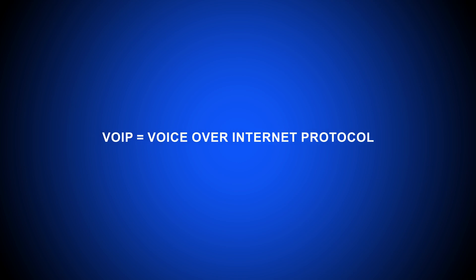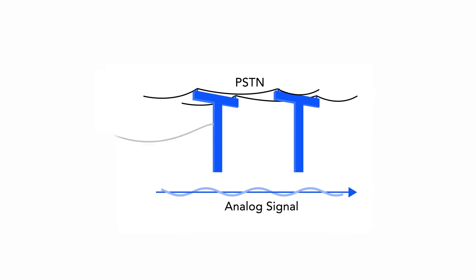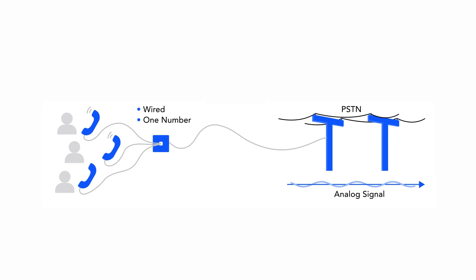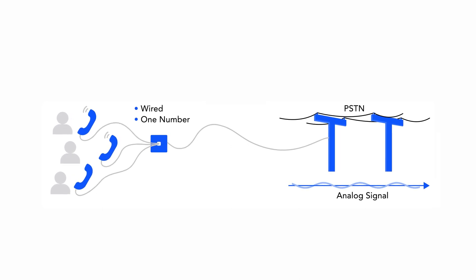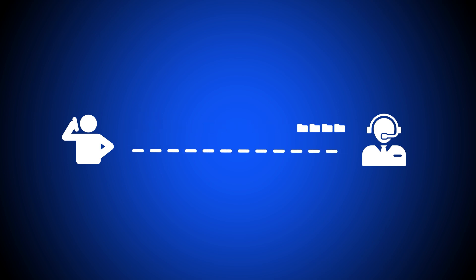VoIP, or Voice Over Internet Protocol, is a digital phone system technology that allows users to make voice calls over the internet. Unlike traditional phone systems which use the public switched telephone network, or PSTN, to make calls over wired landline, VoIP enables voice communications by transmitting data packets wirelessly over ethernet. To put simply, VoIP uses the internet to make calls while traditional landline phone systems use cable wires.